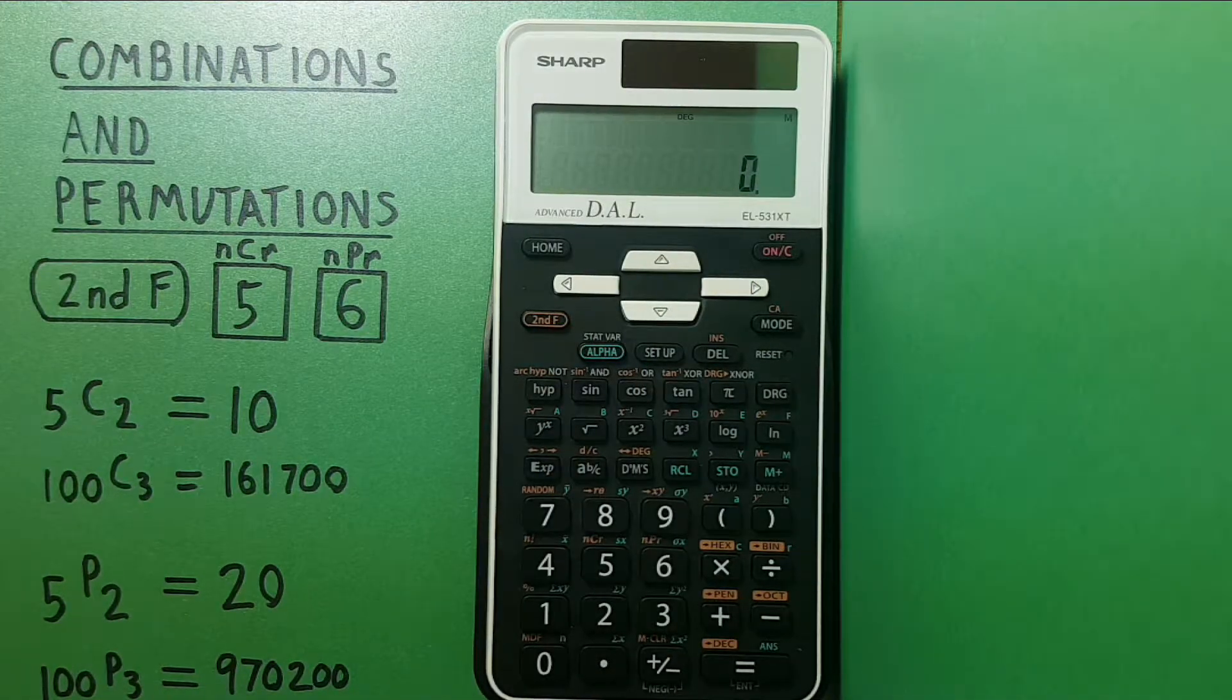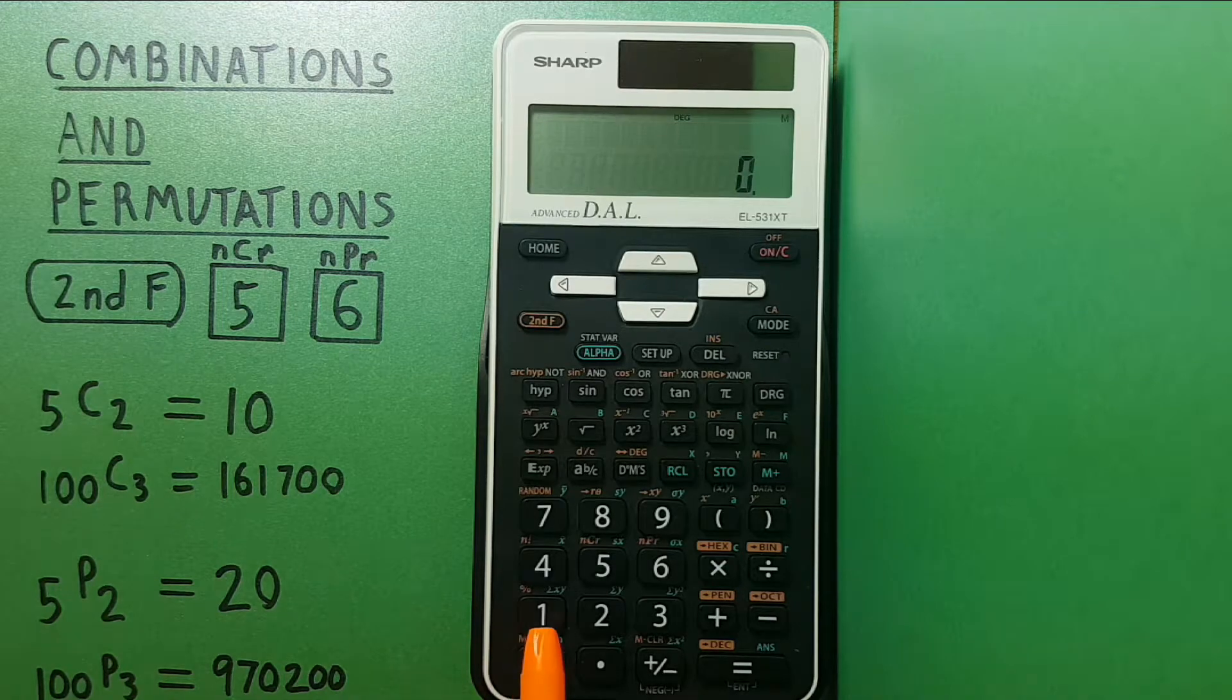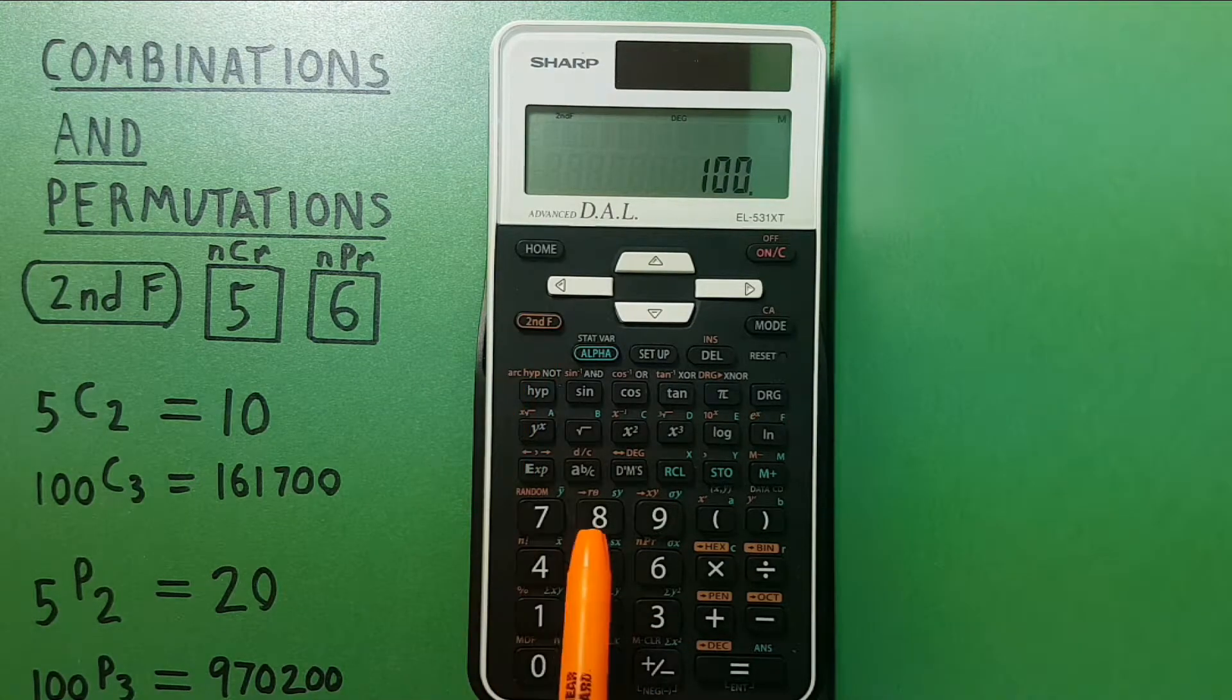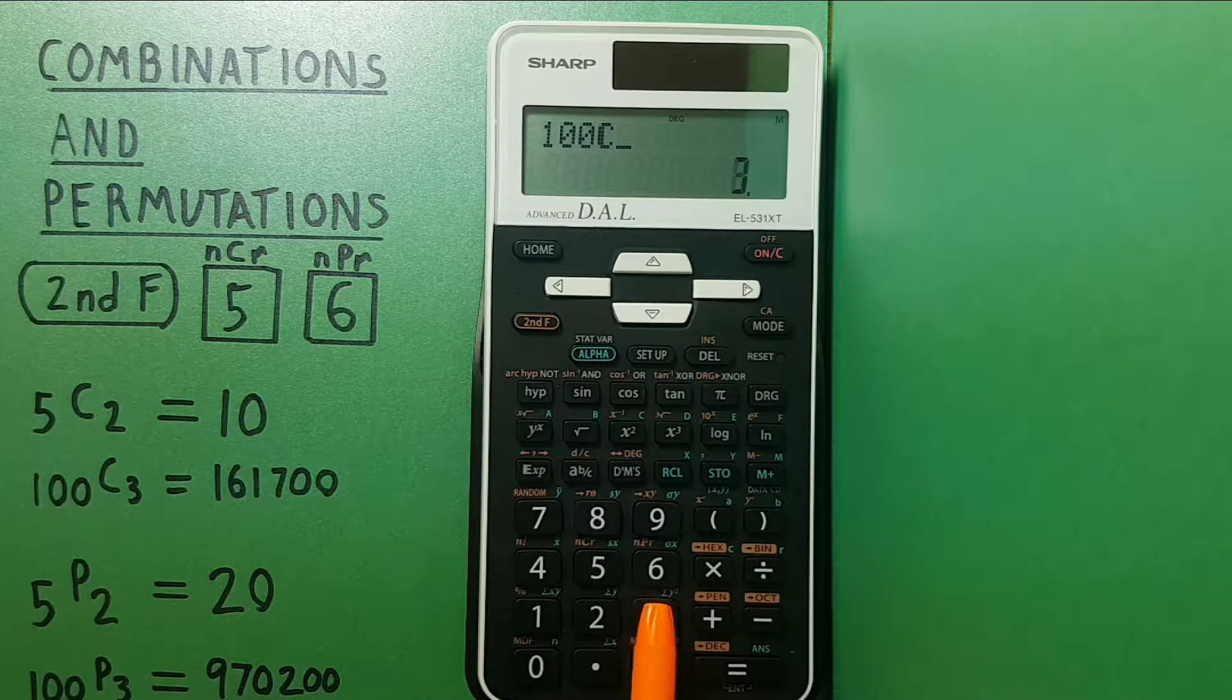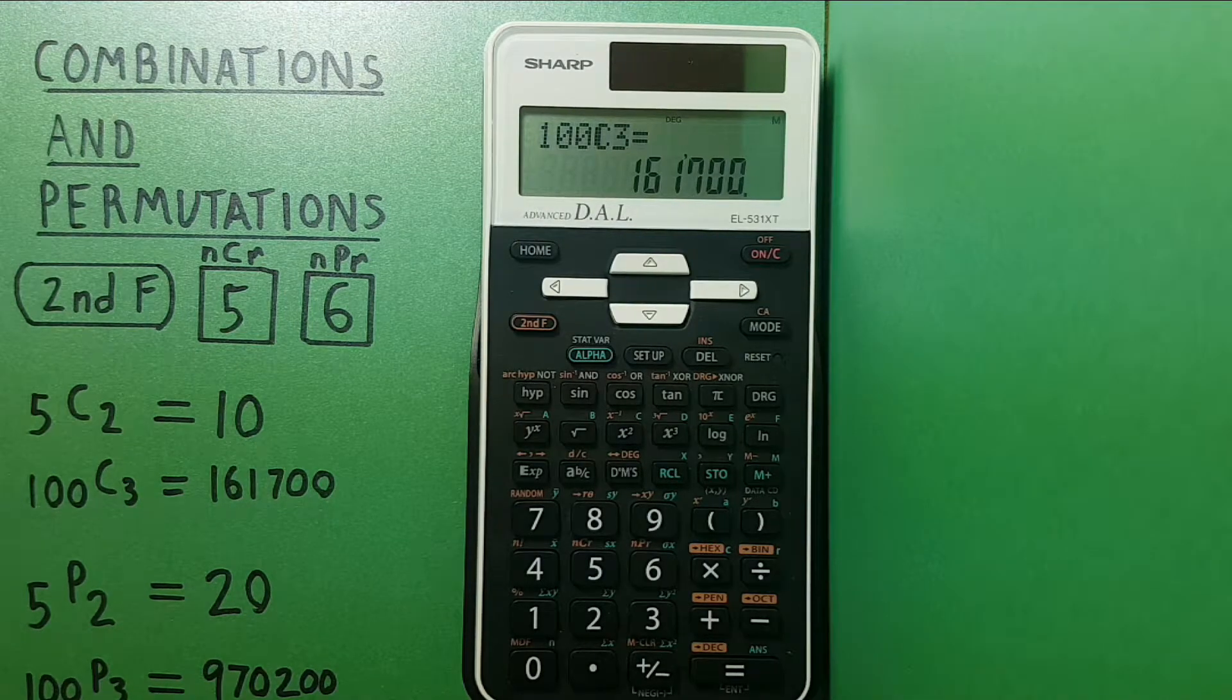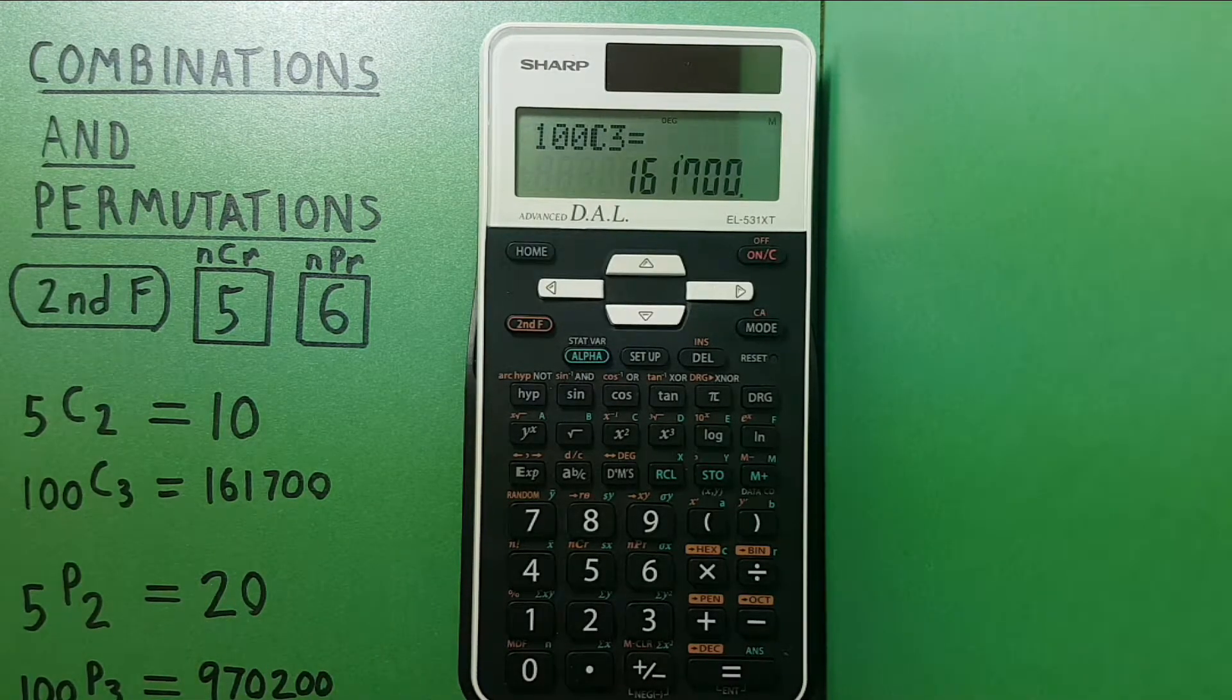Let's try this with a larger number. Say we wanted to choose three from 100. We would start by entering 100, second function five to get the C, and then three. Press equals and you can see that 100 choose 3 gives us 161,700 possible combinations.